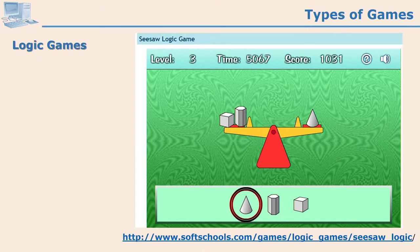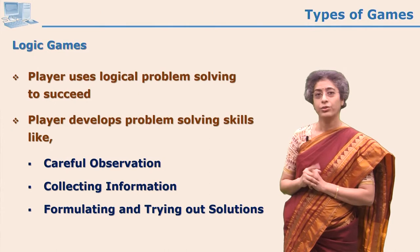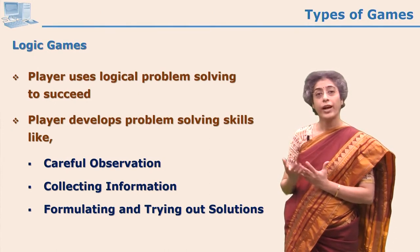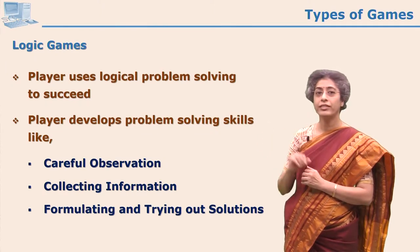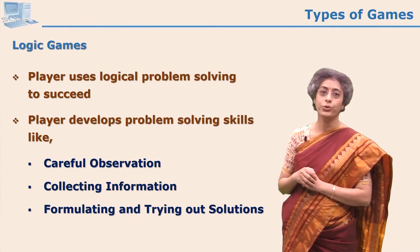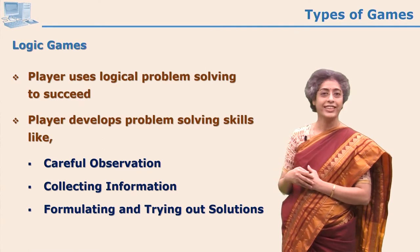Let us see this logic game. It is a seesaw and the question is which object is the heaviest among all provided objects. The learner has to use logic: two objects are equal to one cone object, so the cone must be the heaviest. Objects on the seesaw keep changing and every time the learner needs to click on the heaviest object. The learner uses logic and also learns geometry in the process.